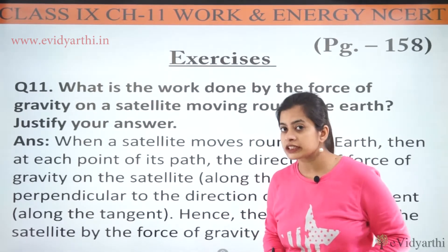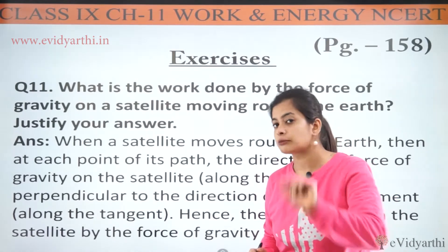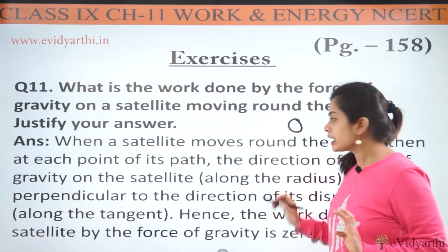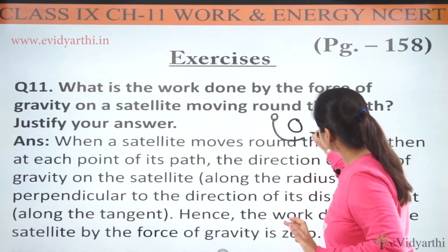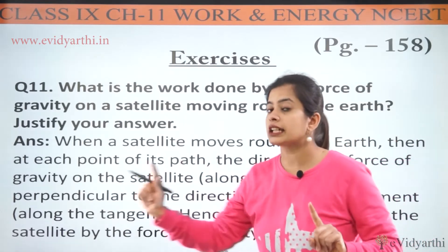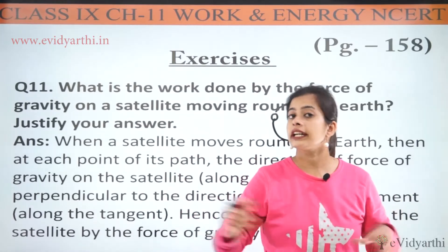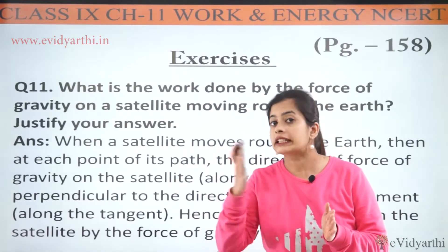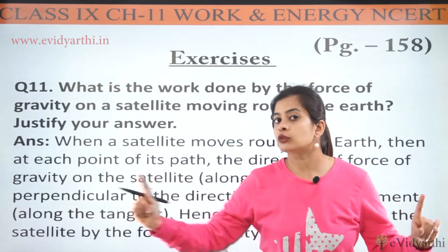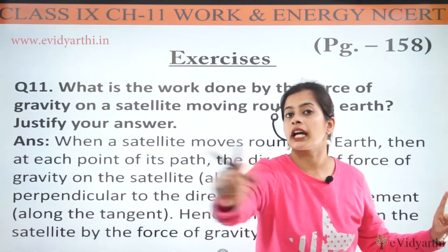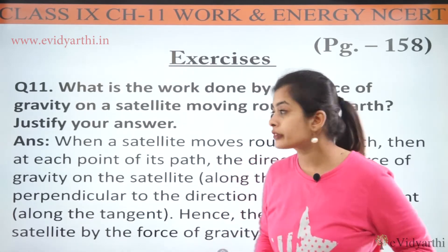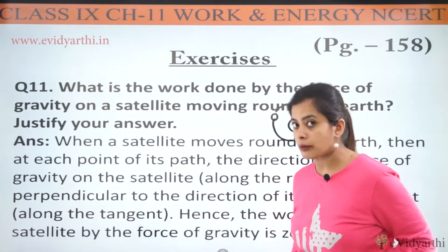Before understanding the answer, let's understand it diagrammatically. For example, this is our earth, and around it the satellite follows a circular path like this. Just like the earth revolves around the sun, similarly our earth's natural satellite — the moon — or any artificial satellite revolves in an orbit around the earth. So what is the direction of its revolution, and how much work done happens there — that is what we need to find out.